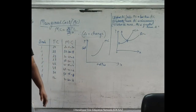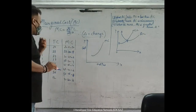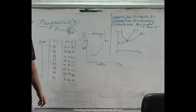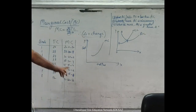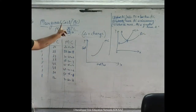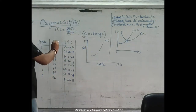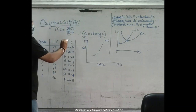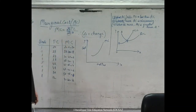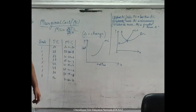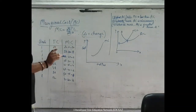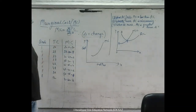Now we have the marginal cost column. The marginal cost formula is delta TC — change in total cost divided by change in the quantity of output.